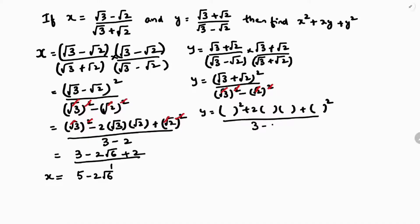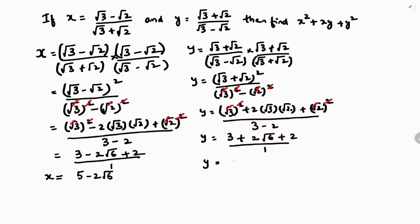The denominator simplifies as squares and roots cancel, leaving 3 minus 2 equals 1. With a as √3 and b as √2, √3 times √2 is √6. So the numerator is 3 plus 2 times 2√6 plus 2, giving 5 plus 2√6. Therefore, the value of y is 5 plus 2√6.